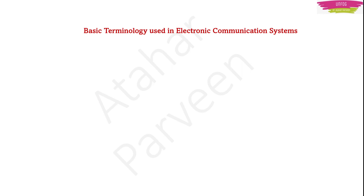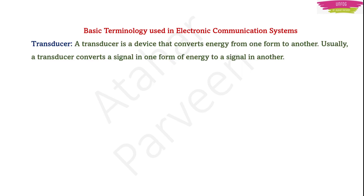There are a few basic terms commonly used in electronic communication systems. A transducer is a device used in communication systems that converts energy from one form to another — it converts a signal in one form of energy to a signal in another form of energy.